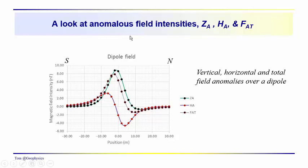Let's spend some time talking about the anomalous field intensities, E sub A, H sub A, and F sub AT, associated with some buried object that could be represented by a dipole field.